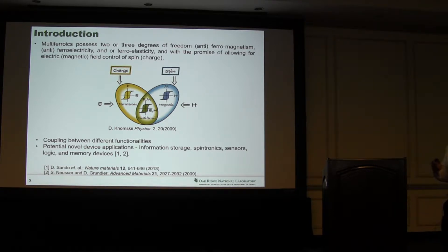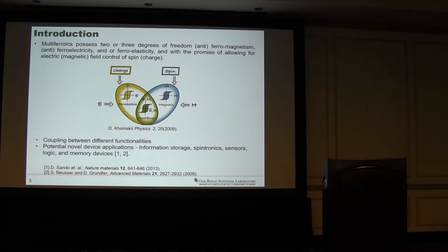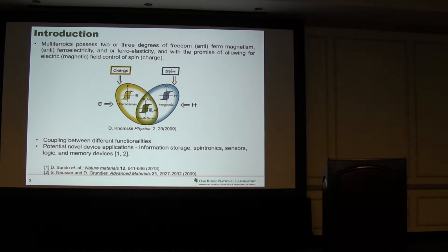So in this community we already know about multi-ferroics. As we know, multi-ferroics have co-existing magnetism and ferroelectricity, and there is coupling between these functionalities that make those materials novel. It has various potential applications in devices, for example information storage, spintronics, sensors, logic, and memory devices. However, those multi-ferroics are very lacking in numbers, so there has been a wide study on bismuth ferrite as a multi-ferroic material.